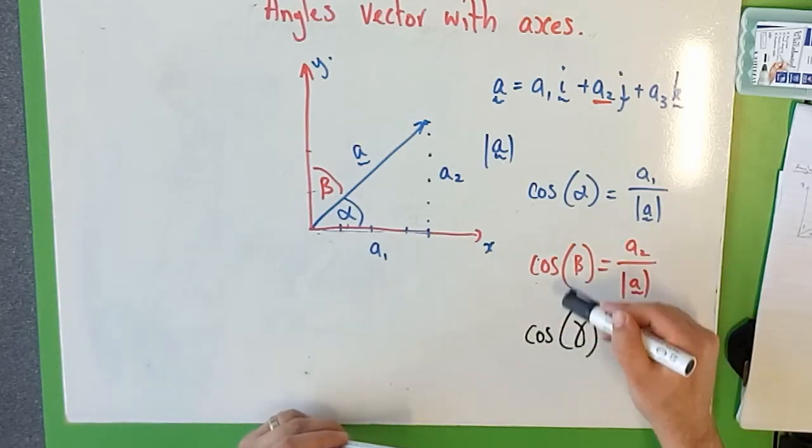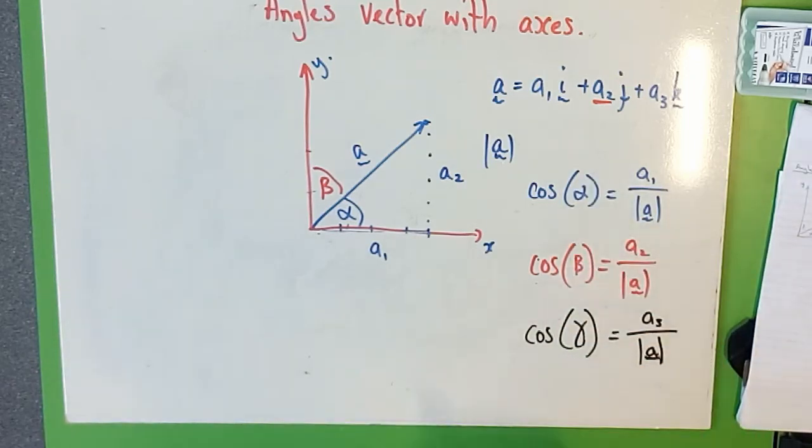So then you can just solve this equation for alpha, beta, gamma, depending on what angle you're looking for. That's it.